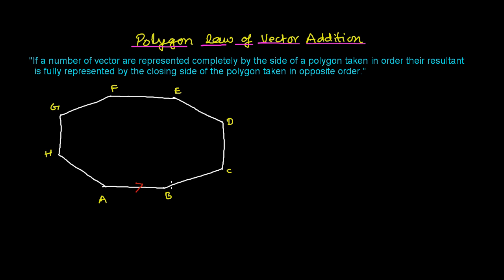Let's say side AB is representing one vector. Similarly, side BC is representing another vector. Similarly, CD is representing another vector. Similarly, DE is representing another vector. Similarly, EF is representing one vector. Similarly, FG is also representing a vector, and GH is also representing a vector.